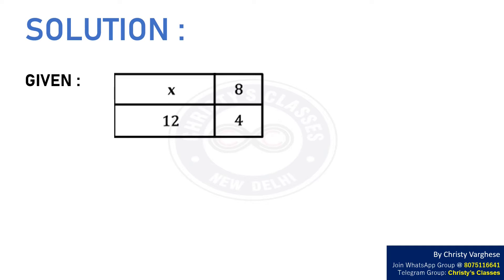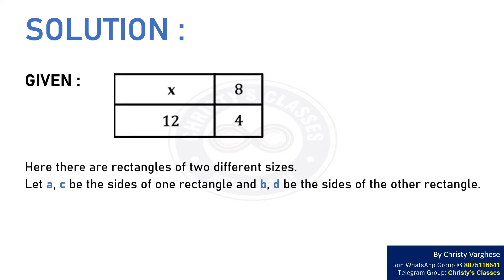Solution. This is a given rectangle. Here, there are rectangles of two different sizes. Let A and C be the sides of one rectangle and B and D be the sides of the other rectangle as shown in the figure.